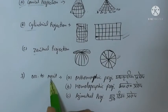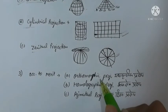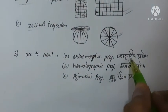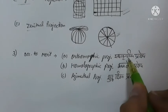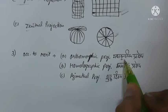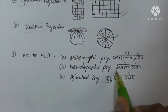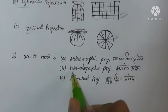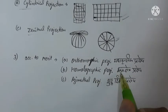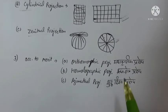Next, we talk about classification according to merit — gunon ke aadhar par. First is orthomorphic projection, called yatha-aakaartik prakshep. In orthomorphic projection, the shape of all maps drawn is completely correct, just as shown on the globe. Next is homolographic projection, called samshetra prakshep, in which the area represented is correct and perfect.